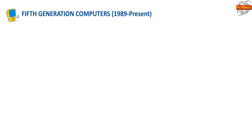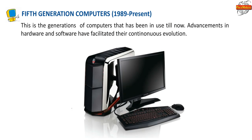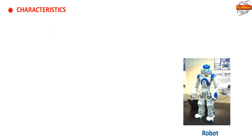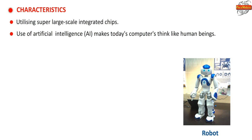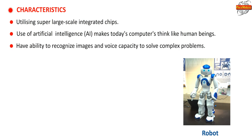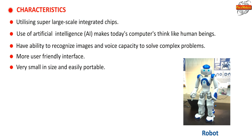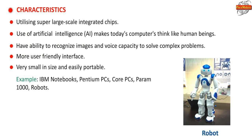Fifth Generation Computers (1989 to present): This is the generation of computers that has been in use till now. Advancements in hardware and software have facilitated their continuous evolution. Characteristics: utilizing super large scale integrated chips, use of artificial intelligence (AI) which makes today's computers think like human beings. They can recognize images and voice, and solve complex problems. They are more user-friendly, very small in size and easily portable. Examples: IBM Notebooks, Pentium PCs, Core PCs, Param 1000 and robots.